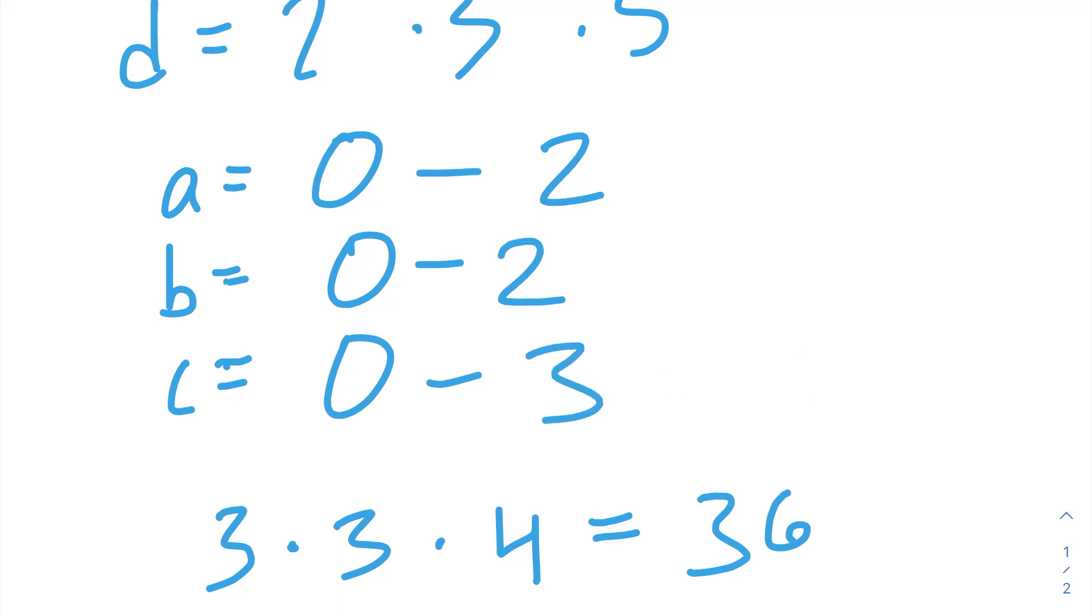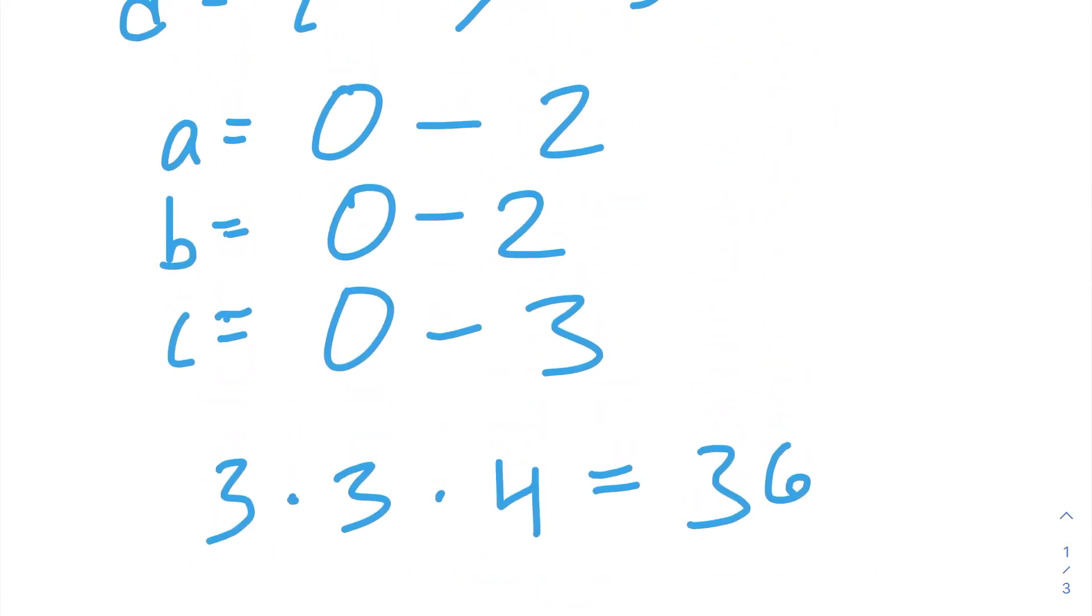Now, all we have to do is count how many integers there are between 0 and 2. We know there are n plus 1 integers from 0 to n. So, there must be 2 plus 1 integers from 0 to 2, 2 plus 1 integers from 0 to 2, again, and 3 plus 1 integers from 0 to 3.